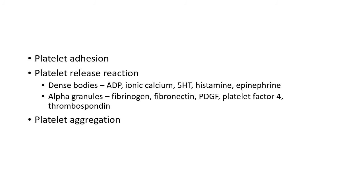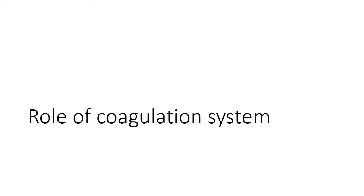Dense bodies release substances like ADP (adenosine diphosphate), ionic calcium, 5-HT (serotonin), histamine, and epinephrine. Alpha granules release fibrinogen, fibronectin, PDGF (platelet-derived growth factor), platelet factor 4, and thrombospondin. This platelet release reaction is followed by platelet aggregation: ADP released is a potent platelet aggregating agent, causing aggregation of additional platelets, which produces a temporary hemostatic plug.